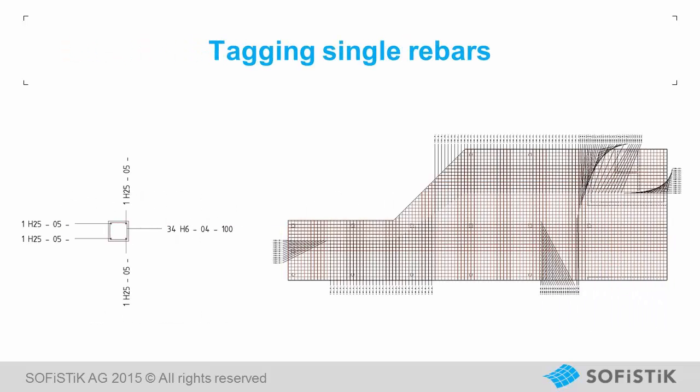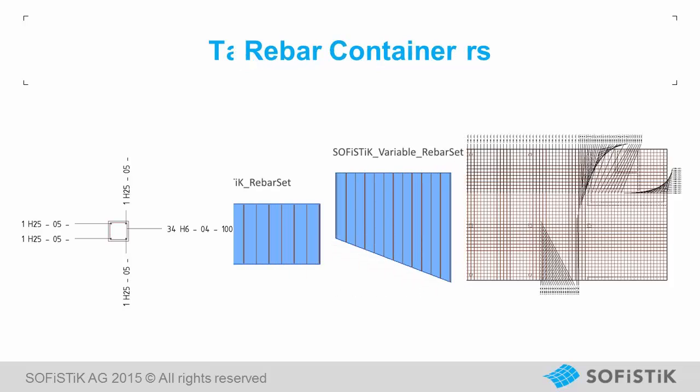Have you ever wanted to group single rebars, for example four bars in a column, or an irregular reinforcement system in a slab, to tag and put them in a schedule as one unit? From now on you are able to do so. Let's have a look at the new technology.